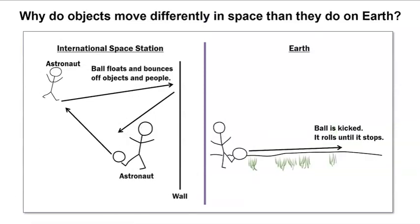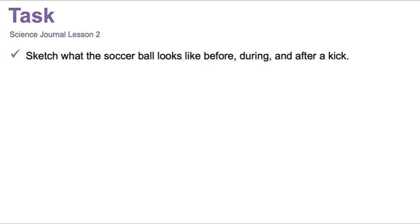Why do objects move differently in space than they do on Earth? I still have a lot of questions, and I bet you do too. I wonder what causes objects to float in space. What do you wonder? I can't wait until our next lesson where we'll continue to think about motion in both of these settings. Let's review your task for today: sketch what the soccer ball looks like before, during, and after a kick.